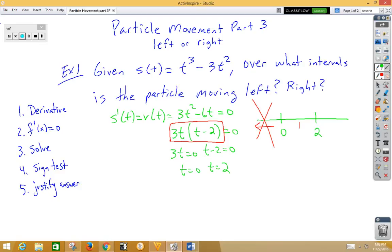As we plug in a one for 3t, we get a positive number. When we plug in a one for t minus 2, we get a negative number. A positive times a negative gives us a negative in that interval. The negative means that the particle is moving to the left. So particle is moving left from zero to two.